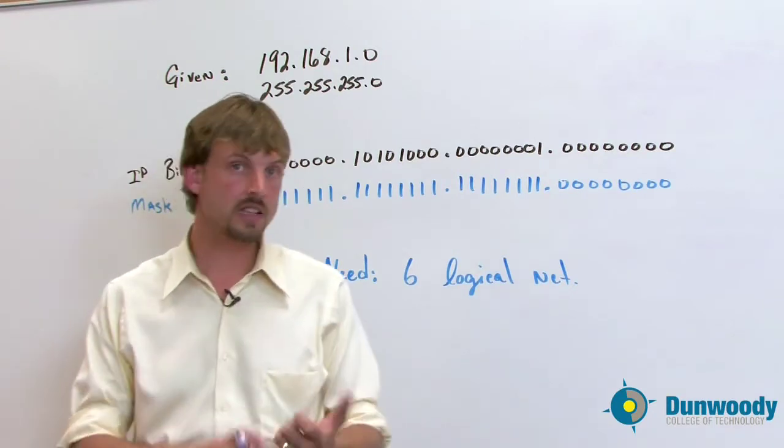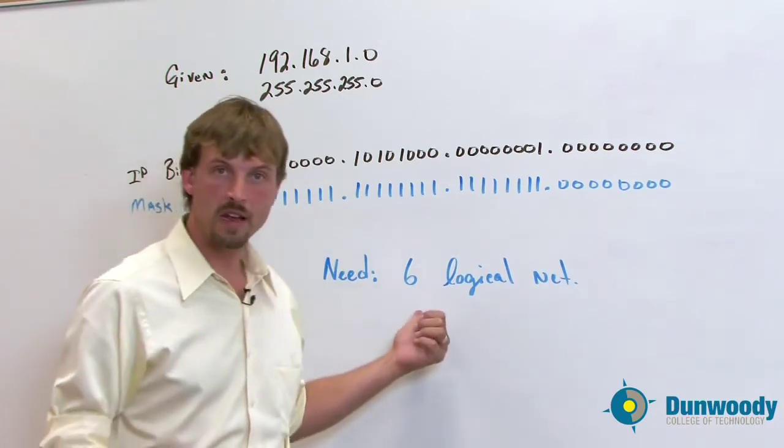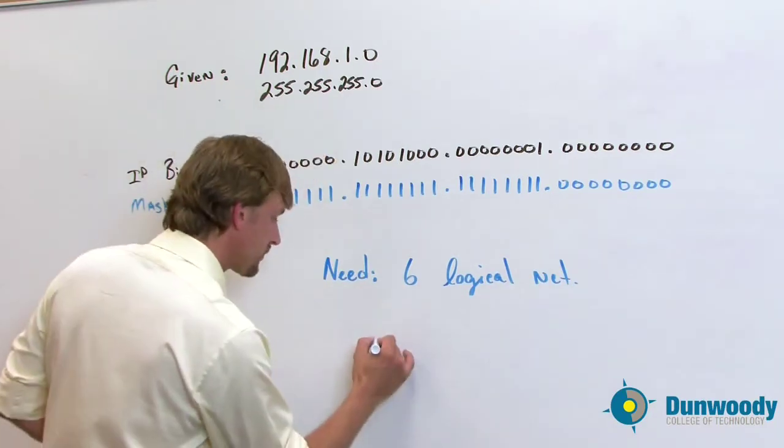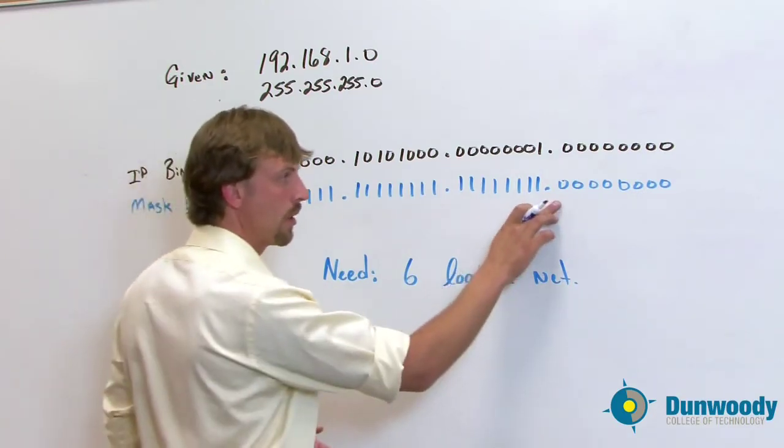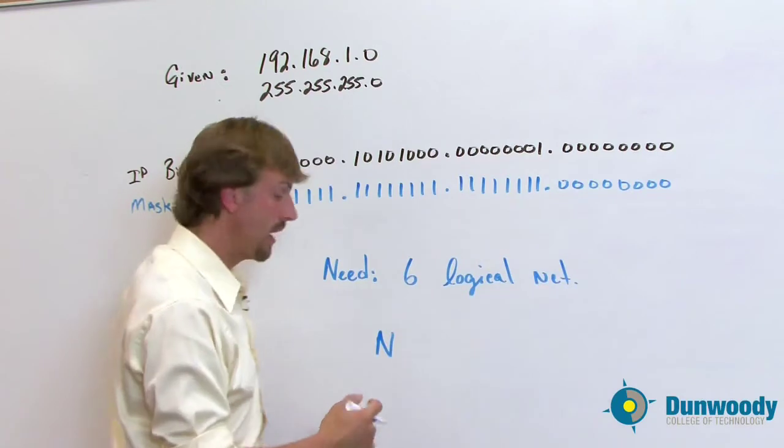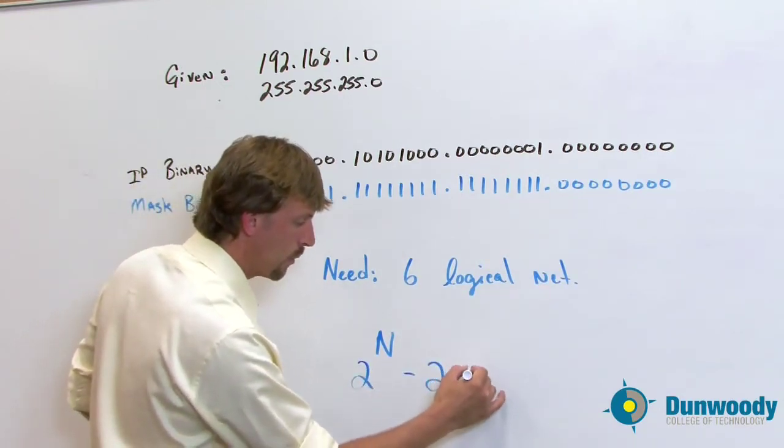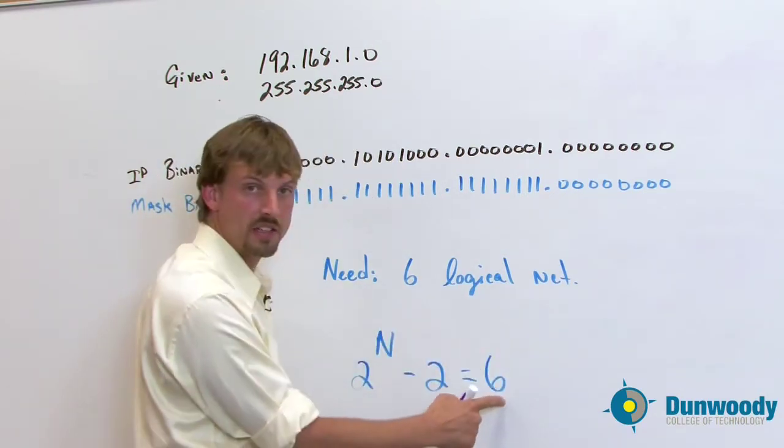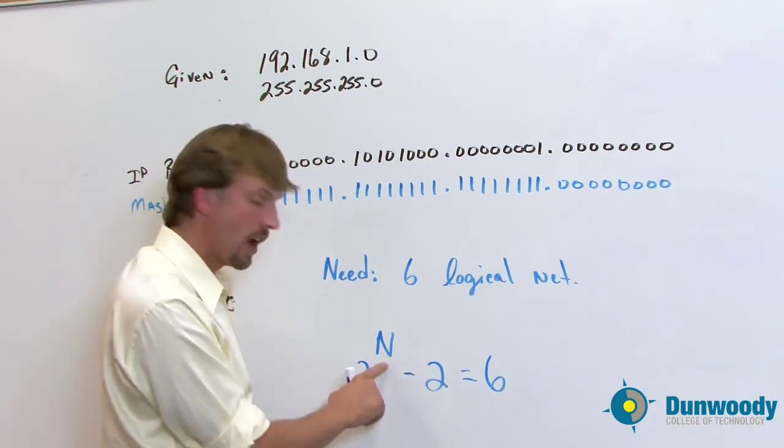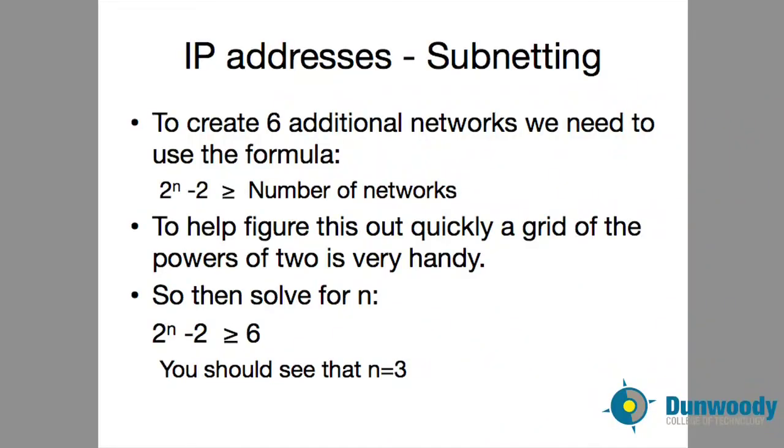We don't know the number of bits and that's N. That's that power that we need to figure out. But we do know how many networks we need. So the unknown is N and that's the number of bits. That's what we got to figure out, how many bits are we going to move that way. And that's a power of two. And what we do know is that we need six logical networks. So that's out here, that's the solution to this. But we have this variable that we don't know what that is. So through some simple algebra here, I'm just going to solve this quickly and add two to both sides.